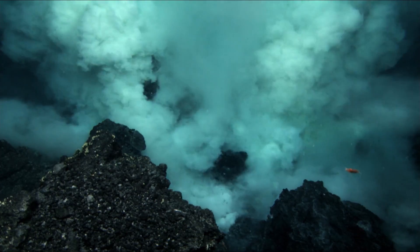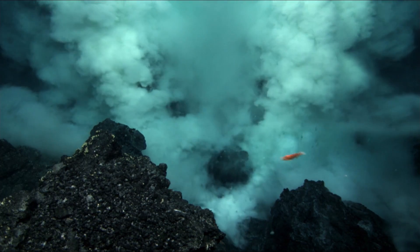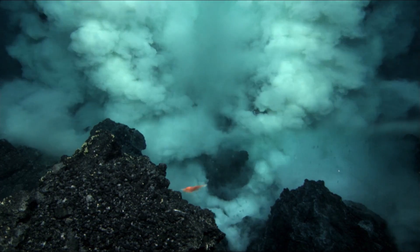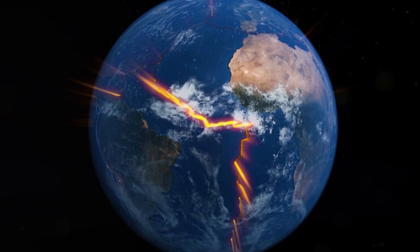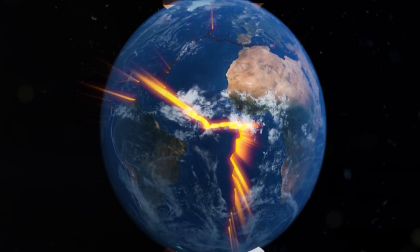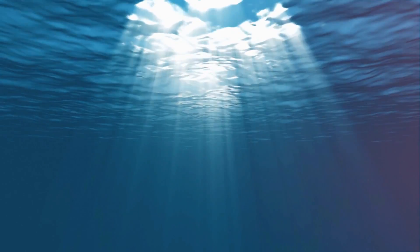In fact, these eruptions account for 75% of the planet's annual magma output. Although fissures are most commonly seen at the ocean's depths, they can also be found in shallow waters.